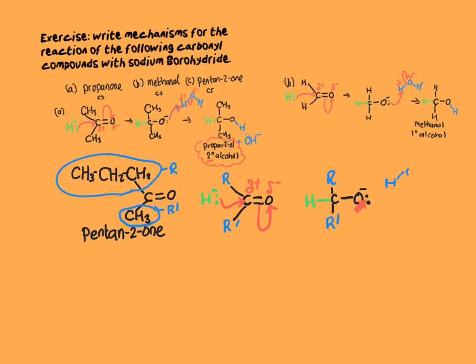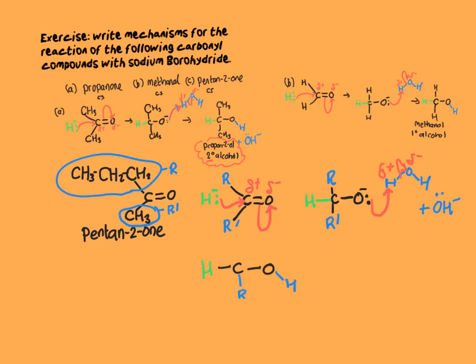This pair of electrons now removes a proton from water by donating the pair of electrons originally from the pi bond. The covalent bond between the hydrogen and the oxygen breaks as the electrons move onto the oxygen. The resulting species is again an alcohol. We leave the R groups on to show the whole structure, and then we draw the whole molecule out following the mechanism, substituting back in the alkyl groups.